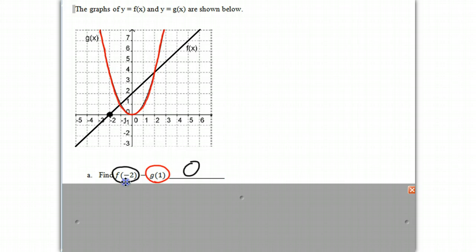When we look at g of 1, that's the red function, and that's where x is 1. If you notice where x is 1, y is 1. And so we simply say g of 1 is 1, so it becomes 0 minus 1. And you know that 0 minus 1 is negative 1, and that is our answer.